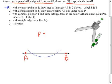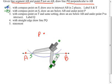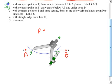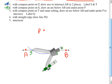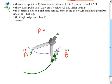And we're going to label these two new spots S and T. Then, when that's complete, we're on step number two. With compass point on S, draw an arc below AB and under point P. So below AB and under P. That's a good spot.